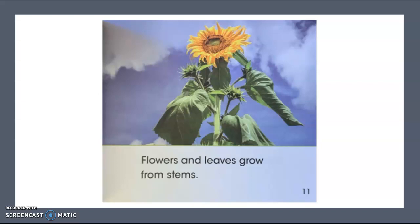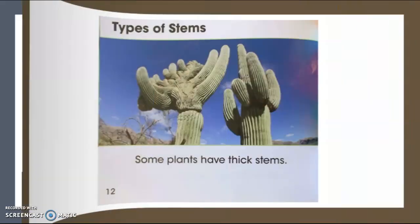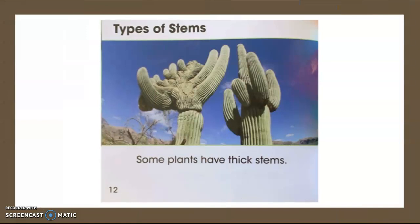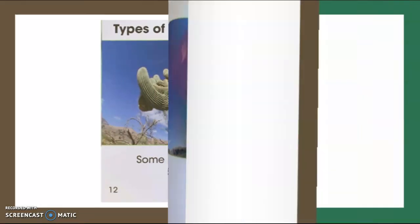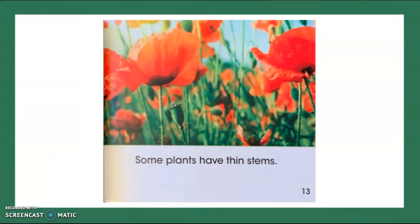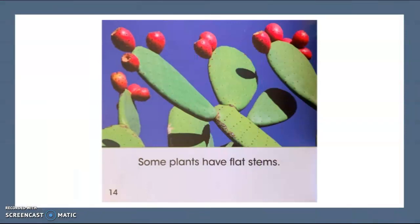Flowers and leaves grow from stems. There are many types of stems. Some plants have thick stems. Some plants have thin stems. Some plants have flat stems.